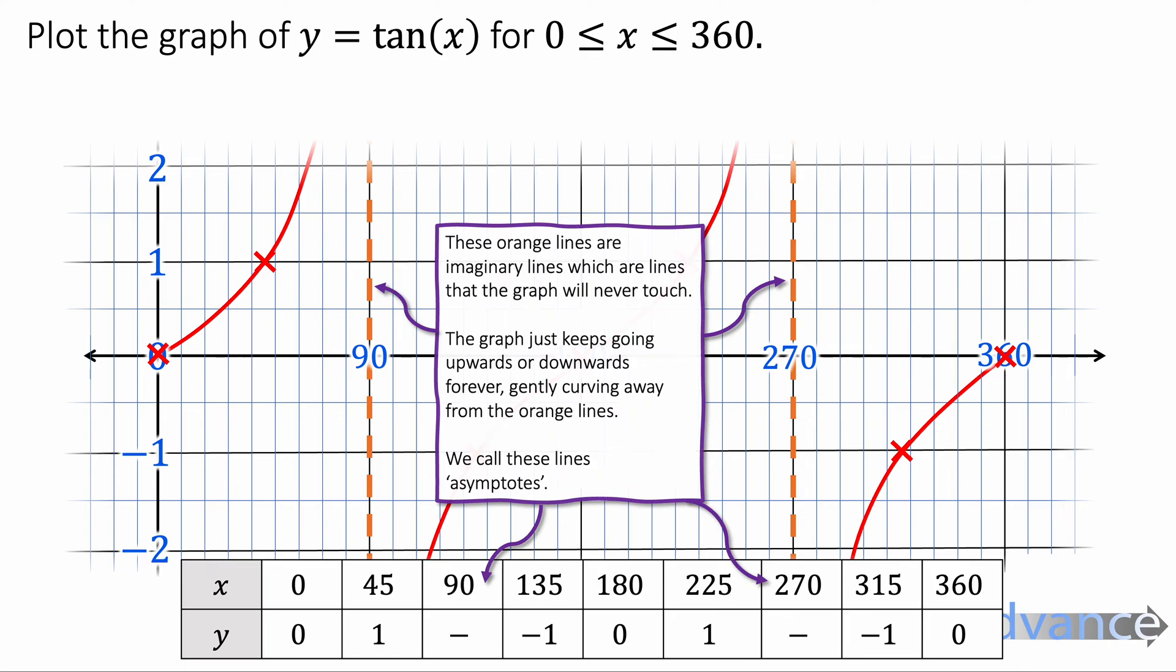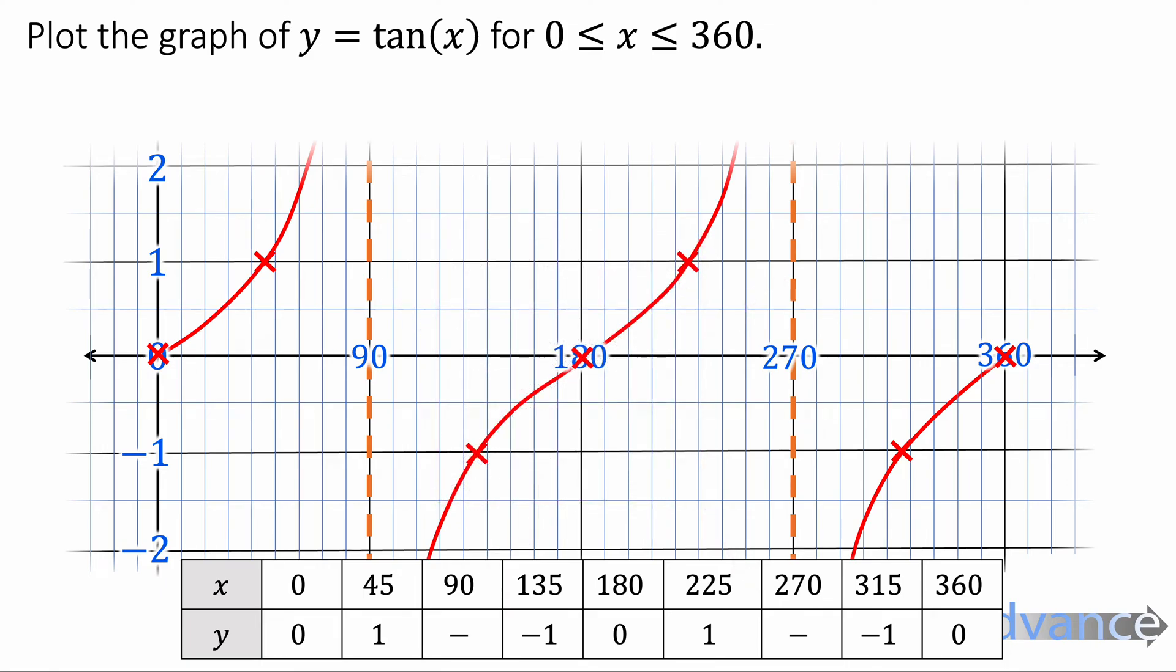Notice that there are lines here at 90 and 270. These are called asymptotes. You don't need to draw these asymptotes in your exam, but it's interesting to know they are there. They are lines that the graph will never touch. The graph will just curve away from them, get really close, but never touch them. So that's the tan of x graph.